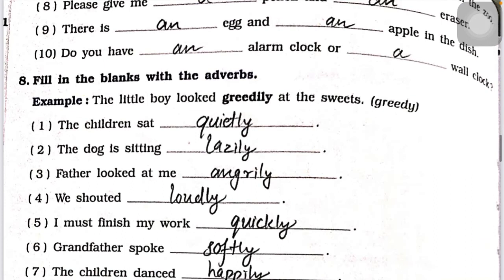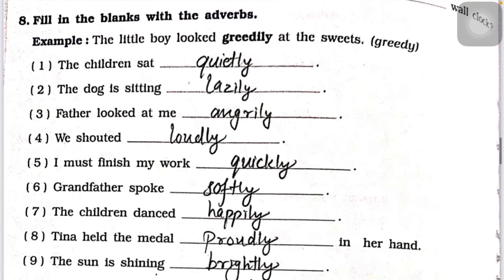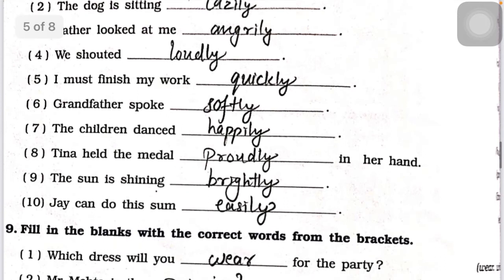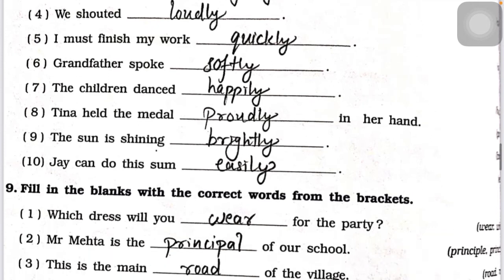Now fill in the blanks with adverbs. When we add something to a verb, that is called an adverb. For example, 'quiet' becomes 'quietly' by adding -ly. The children sat quietly. The dog is sitting lazily. Father looked at me angrily. We shouted loudly. I must finish my work quickly. Fill up all the blanks in this way.